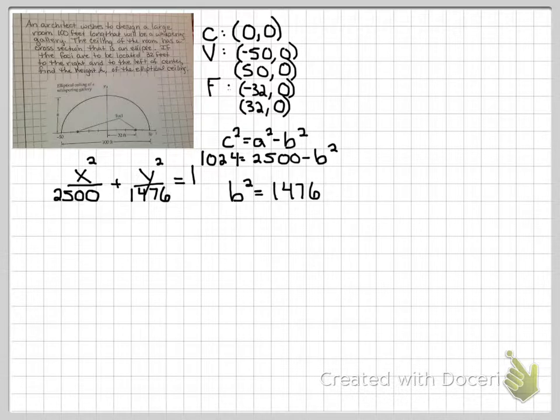But we need to be careful, because the question didn't ask for the equation. I did that to help us practice. The question wants to know the height of the ceiling, h. Well, h is whatever the square root of 1476 is above 0. So square root that and find out where h is.